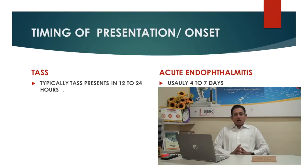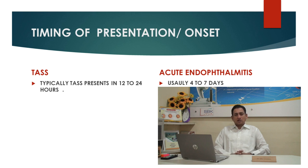Let us compare each clinical feature of TASS and infectious endophthalmitis in detail. Regarding onset, TASS usually appears between 12 to 24 hours after surgery, and acute endophthalmitis usually develops between four to seven days. However, certain fulminant endophthalmitis like Pseudomonas or Bacillus cereus endophthalmitis can develop within 48 hours, but their presentation is usually later compared to TASS.